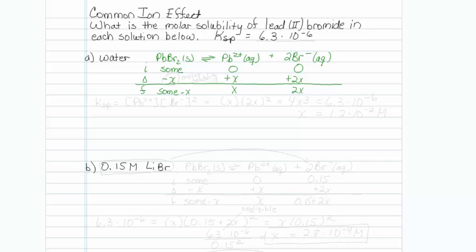My Ksp is going to be equal to my lead concentration times my bromide concentration squared. So that is going to be equal to x times 2x squared which is equal to 4x cubed, and I will set that equal to the Ksp which I'm given as 6.3 times 10 to the minus 6. When I solve for x I get the value 1.2 times 10 to the minus 2 molar, and x of course serves as my molar solubility.